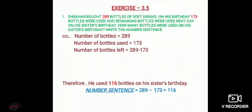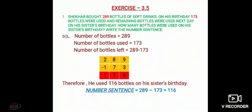Now see how you have subtracted these numbers to get the answer. You have subtracted 289 and 173. Here you can see borrowing is not required, so simply subtract because all the digits on top are greater than the digits written below. 9 minus 3 is 6, 8 minus 7 is 1, and 2 minus 1 is 1. So the answer is 116.